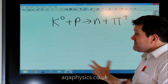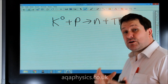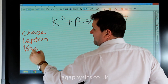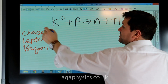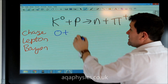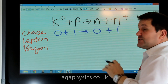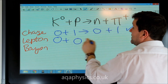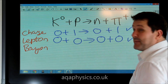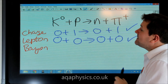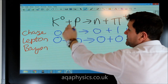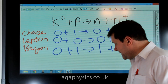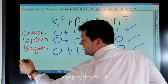This next interaction brings strangeness into play. We have a kaon plus a proton going to a neutron plus a pion. Checking charge, lepton number, and baryon number: the kaon's charge is zero, the proton is plus one, the neutron is zero, and the pion is plus one — charge balances. The kaon, proton, neutron, and pion are not leptons — remember the kaon and pion are mesons — so lepton number balances. The kaon is not a baryon, the proton and neutron are baryons, and the pion is not a baryon, so baryon number also balances.